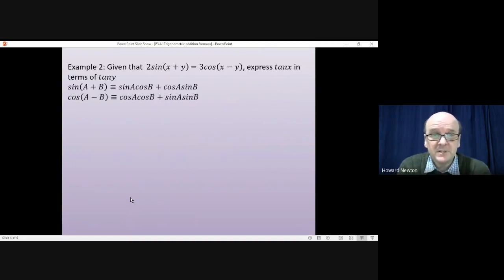Example 2. This one is slightly more tricky. There's one step in particular that's quite hard to guess. But I'll let you have a go yourselves first. So the question says, given that 2sin(x + y) is equal to 3cos(x - y), express tan x in terms of tan y. Those are the two identities we'll be using underneath. I'll let you have a go yourself first. As I say, this one is a bit more difficult, but have a go. Pause the video.